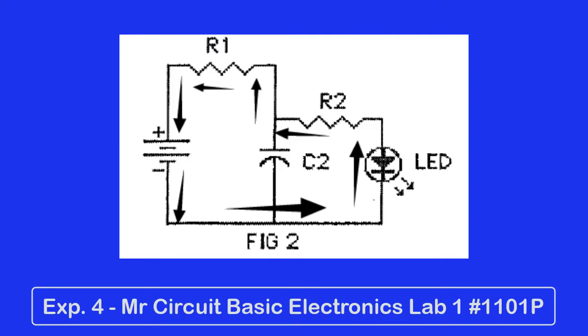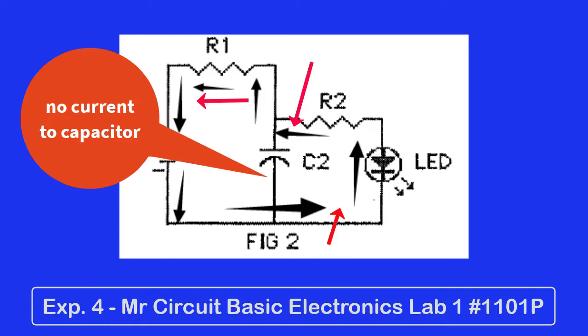We've got electric current coming out of the negative side of the battery, crosses over to where the LED is, up through R2, back through R1 to the battery. But nothing is flowing to the capacitor because it's fully charged.